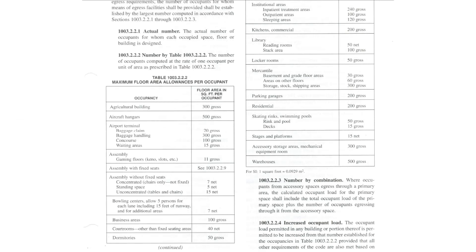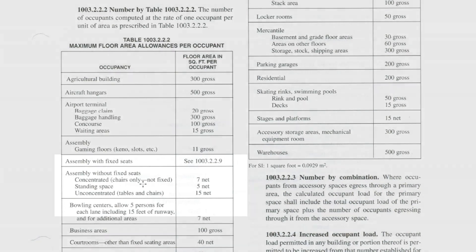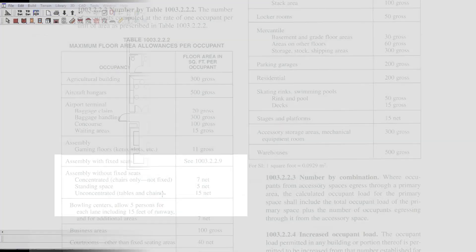The general guidelines for floor area allowances per occupant for A2 assembly are as follows: concentrated chairs only, not fixed, is 7 square feet per patron; standing space only is 5 square feet; and unconcentrated tables and chairs is 15 square feet.